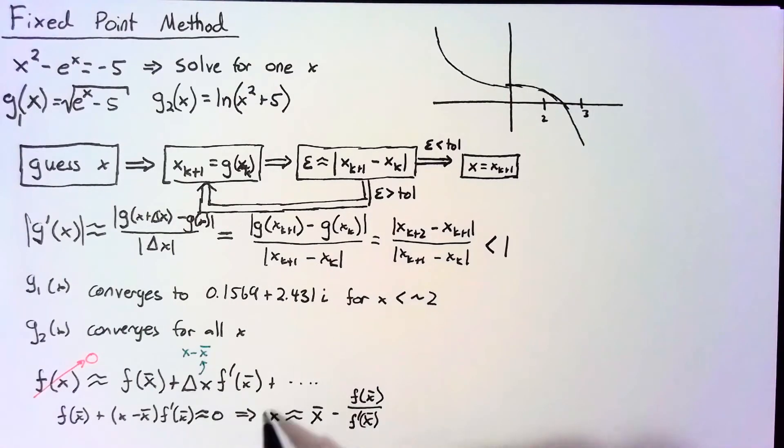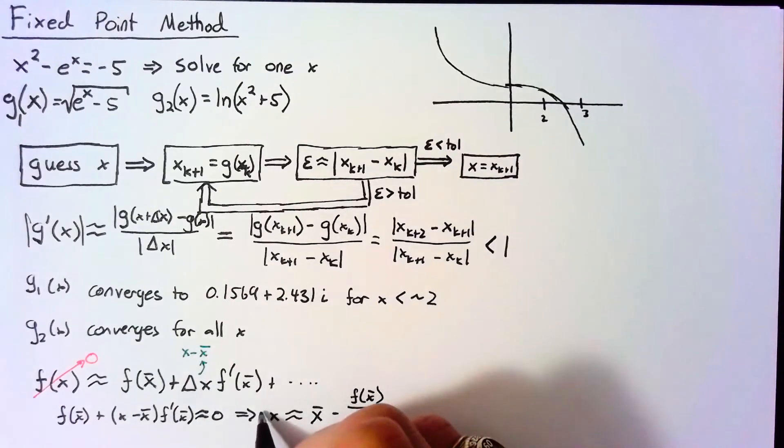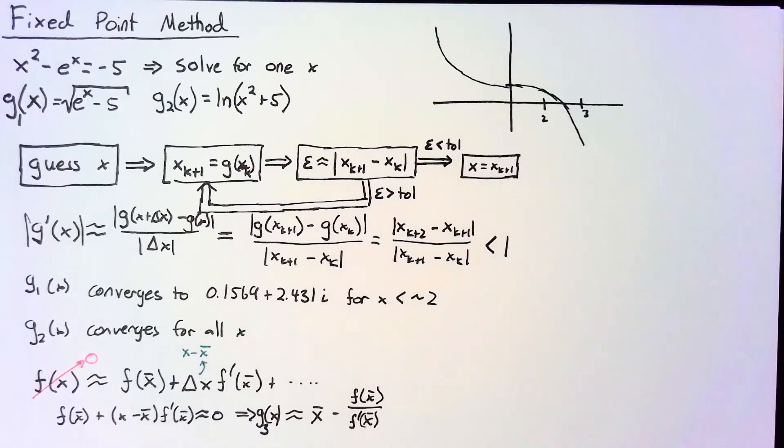So again, we have isolated an x value based on some other x values. So this is our g(x). And I'm going to call it, since we already have two g's, I'm going to call this g₃(x).